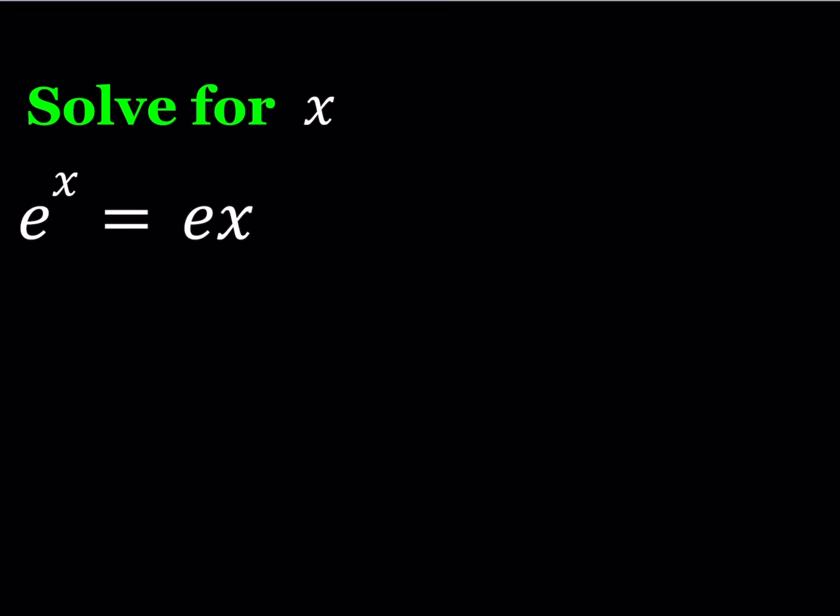I'm going to talk about two different approaches here. The first approach involves defining a function f(x) as e to the power x minus ex. So since I'm trying to solve the equation e to the power x equals ex, if I set my f(x) equal to 0, the x value that I find from here is going to be our solution.